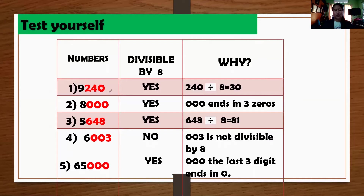Number one, we have 240. So the answer is yes. Because 240, when you divide it by 8, it is 30. No remainder. Another one, number two, 8,000 — it ends in 3 zeros. Yes, it is divisible by 8.